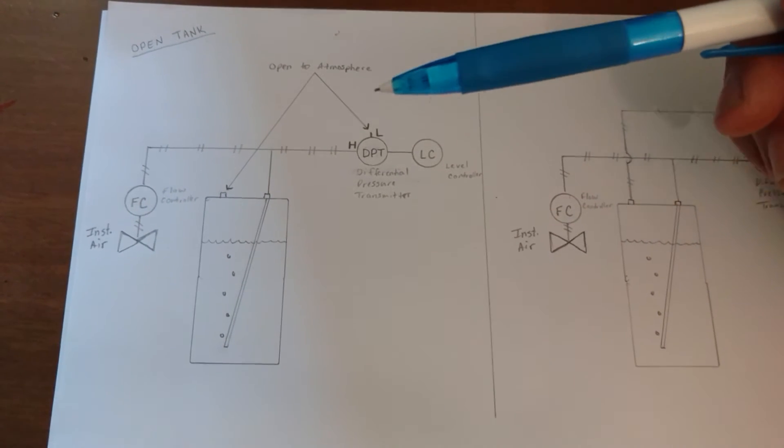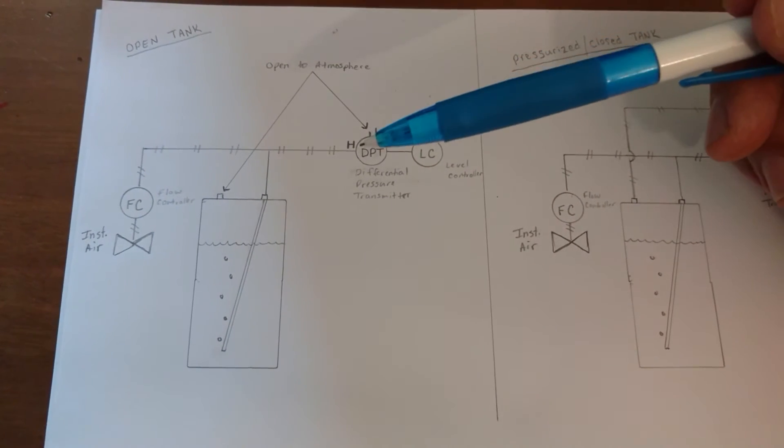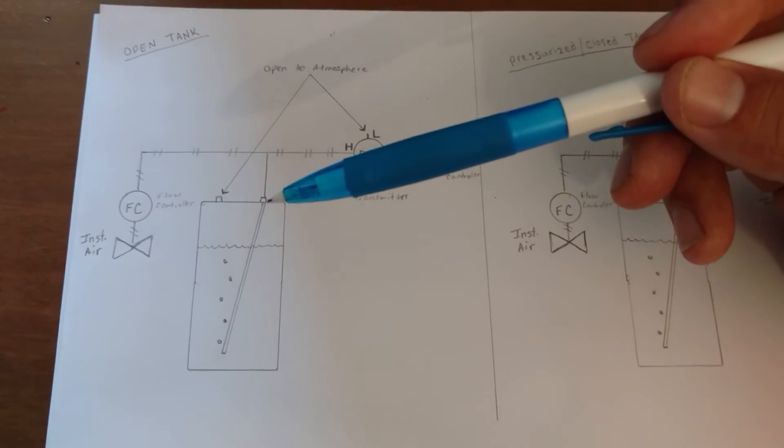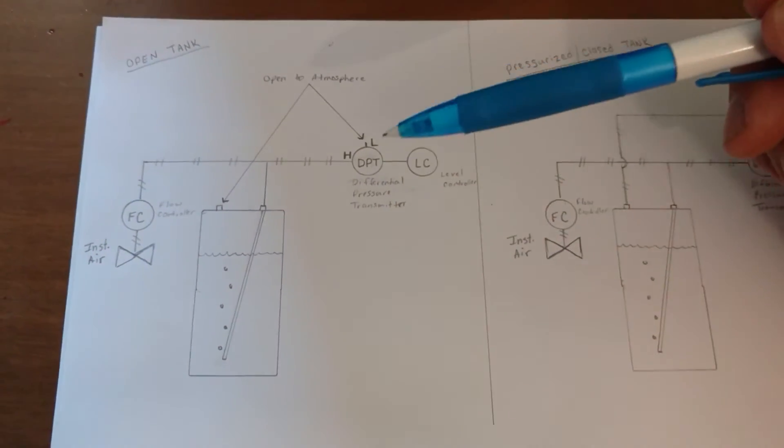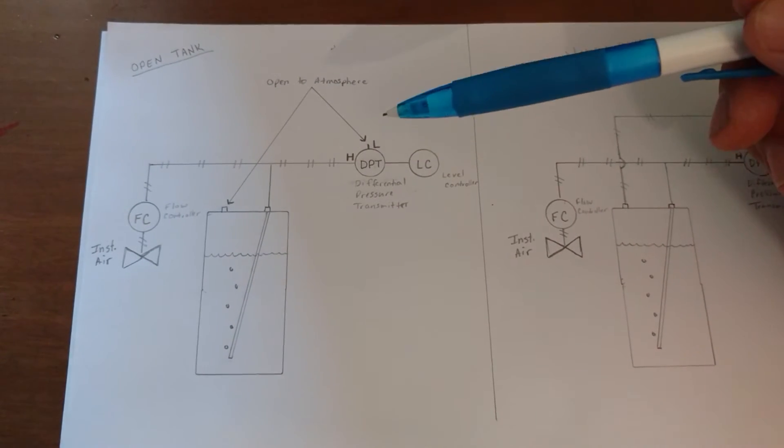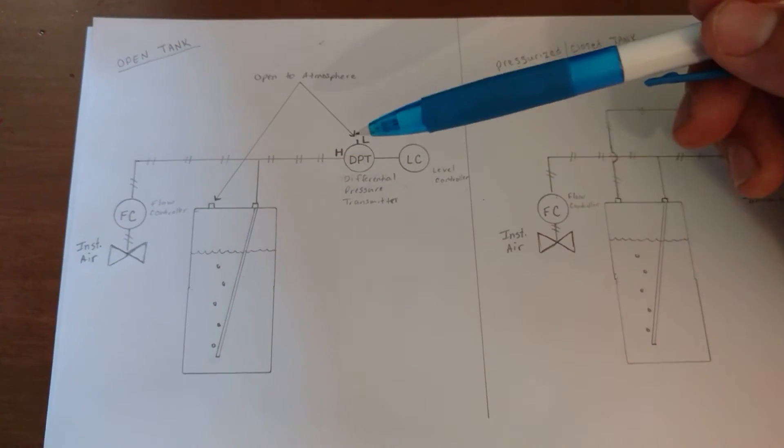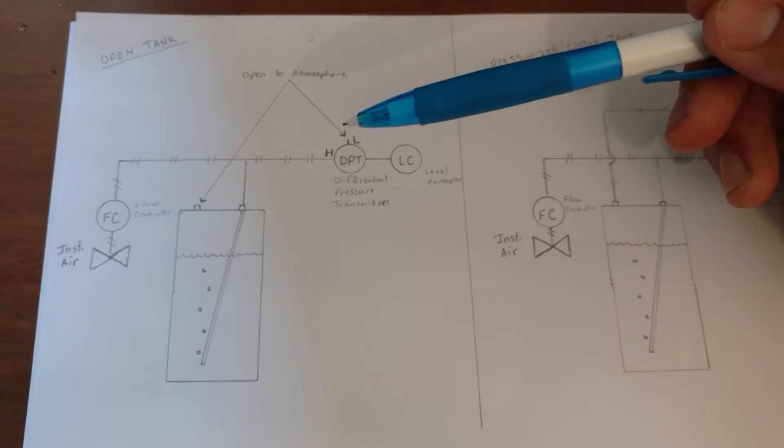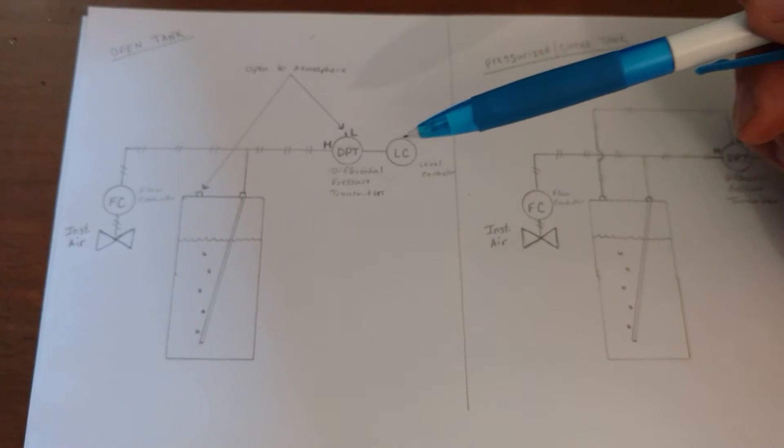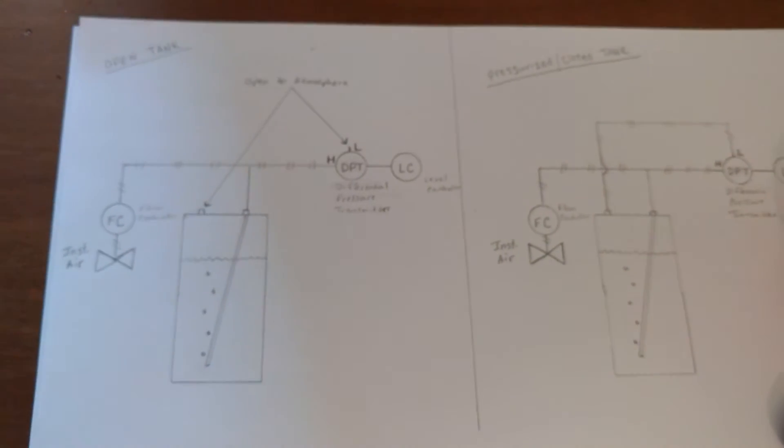So what's happening here is the high side is connected to our pipe, and the low side is not connected to anything. It's also vented to atmosphere, and it does its job by comparing the high and the low and sends an electric signal to our level controller, and we can find the depth.